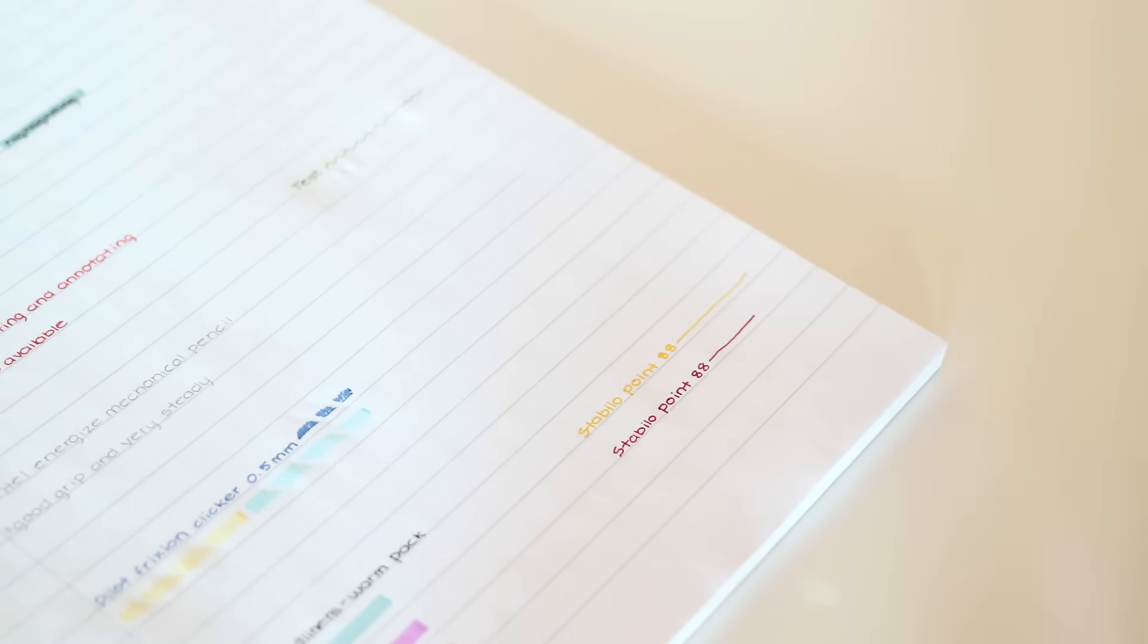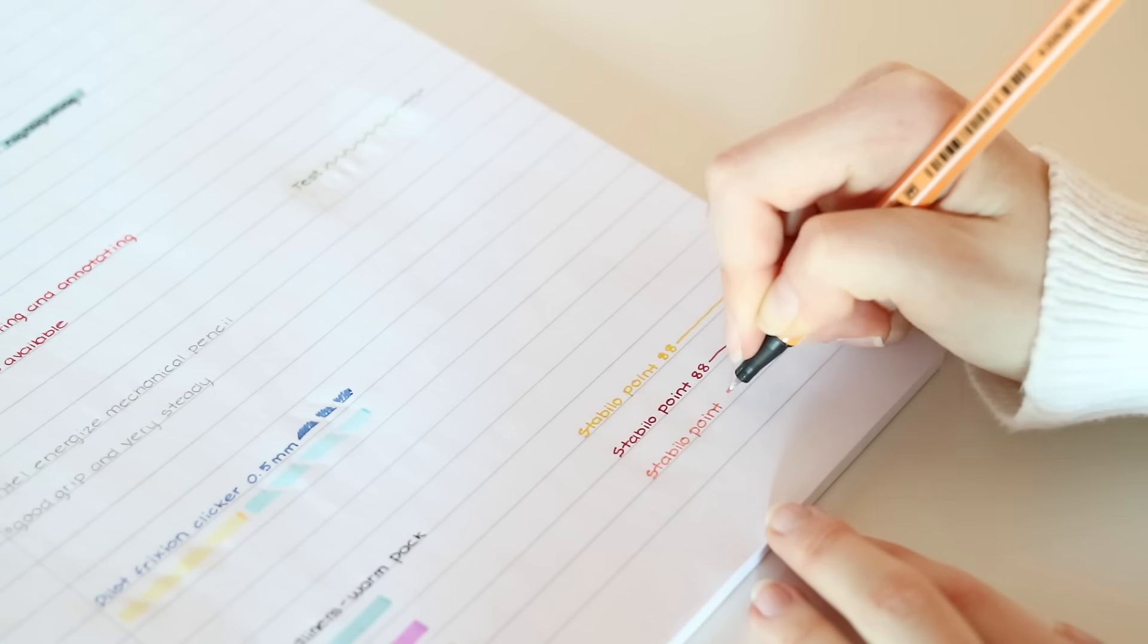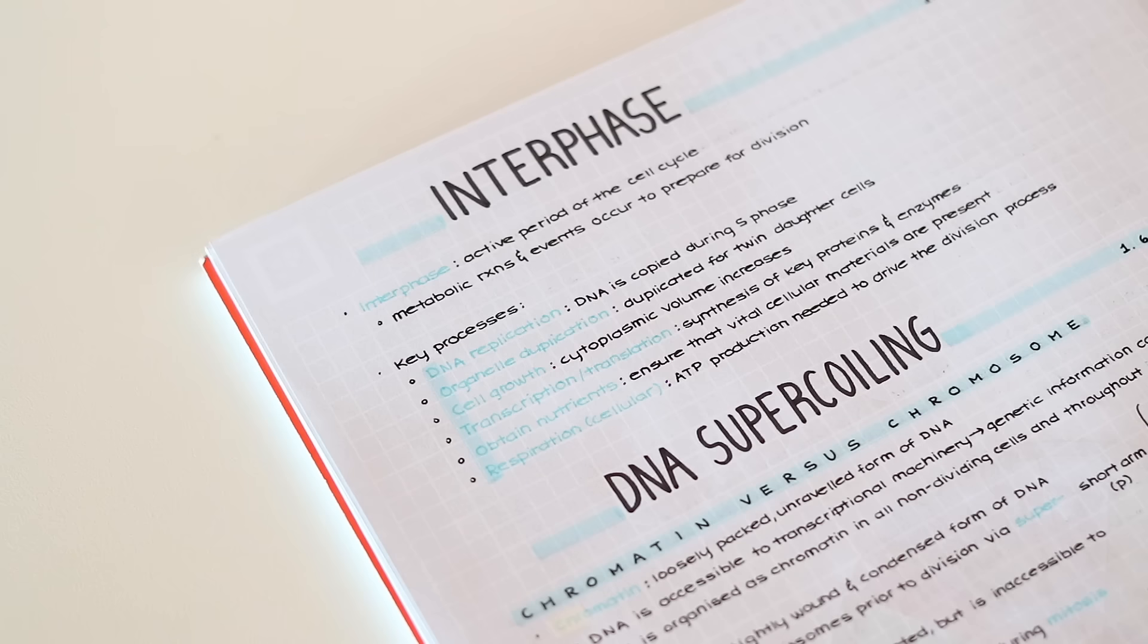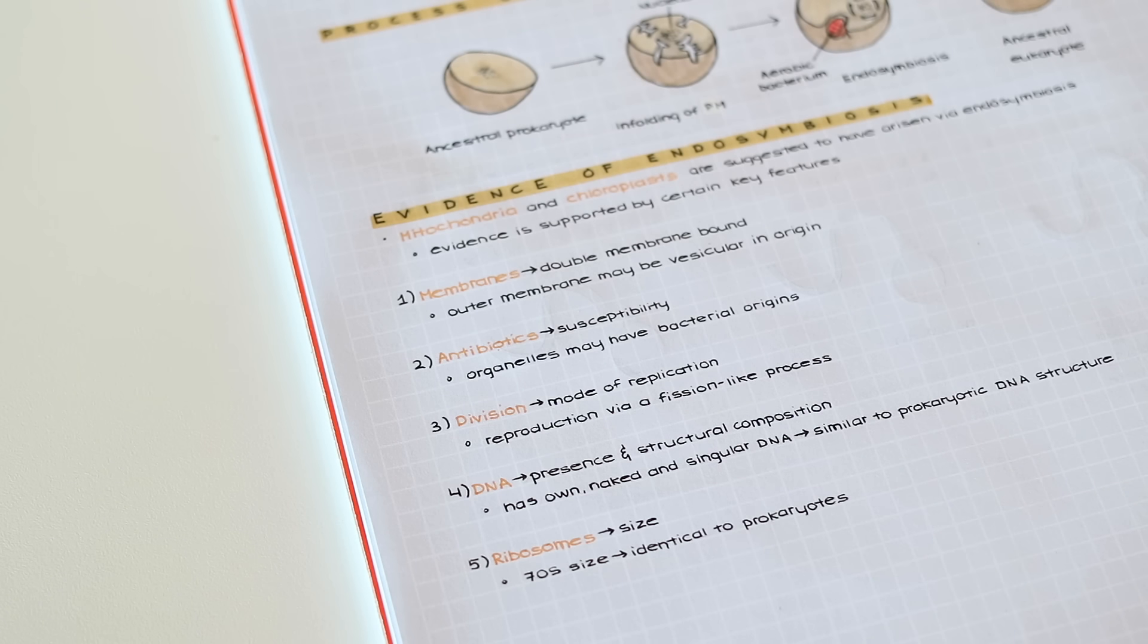But the Stabilo ones write very smoothly, they come in a lot of different colors and the thickness of the line does not change no matter how much you use them.